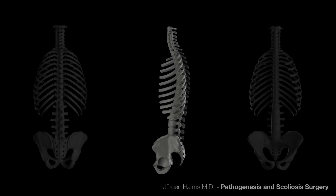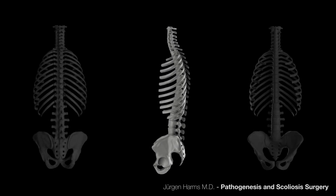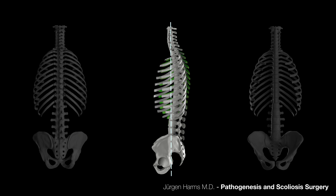Development of idiopathic thoracic scoliosis: pathogenesis, starting from a normal age-appropriate sagittal profile. The scoliosis is caused by a genetic determination leading to lordotic deformity of the sagittal profile and formation of a periapical lordosis.